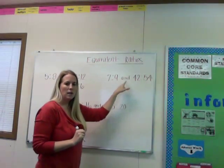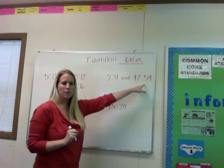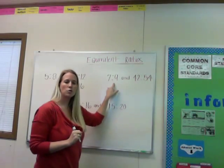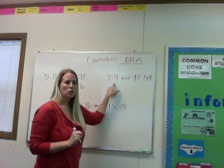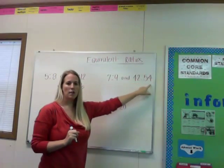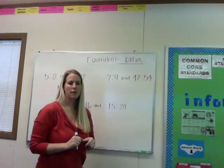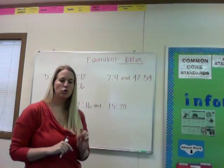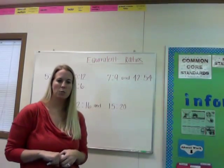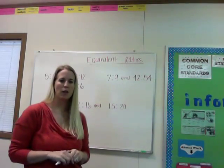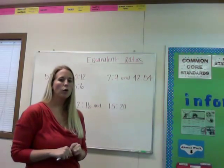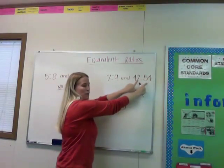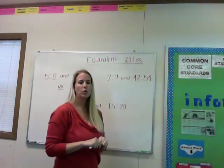Let's look at the next one. We have 7 to 9 and 42 to 54. Well, 7 to 9 is already in simplest form — there's no number that can go into both 7 and 9. So I'm going to look at 42 and 54 and ask myself if there's a number that can go into both. You could use the greatest common factor method, or you could just take it a step at a time.